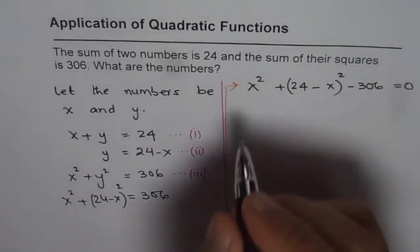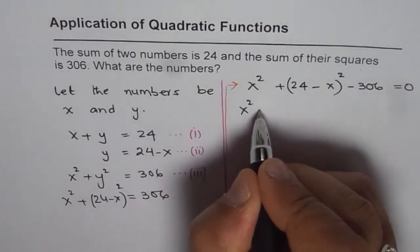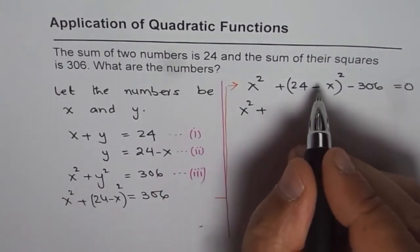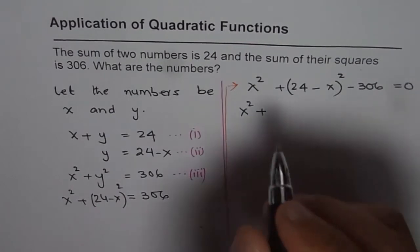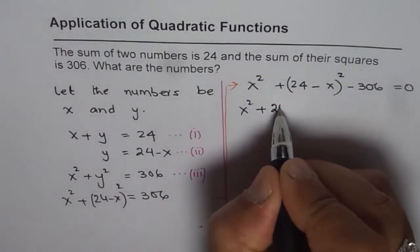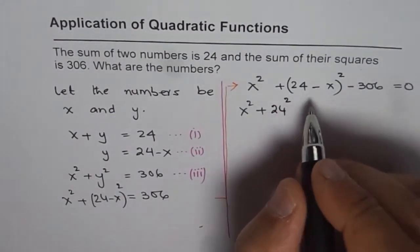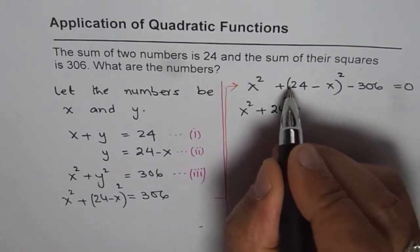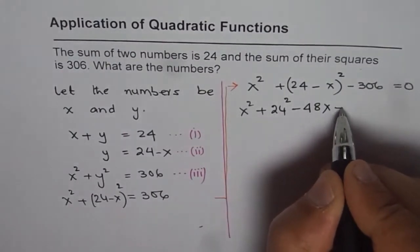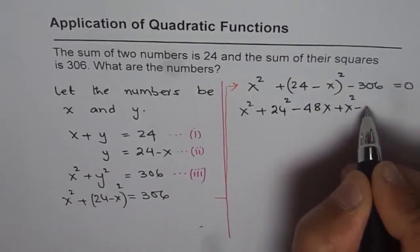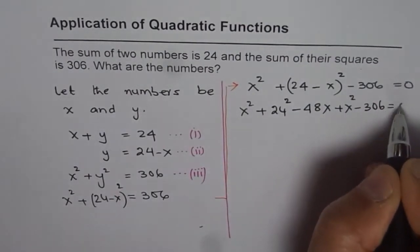Now let us expand. So we have x squared plus 24 squared. 24 squared, let us use the calculator, is equal to 576. Let me expand this: minus 2 times ab, that means minus 48x, plus b squared which is x squared, minus 306 equals 0.